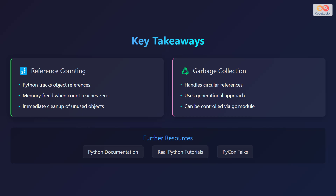Garbage collection handles circular references that reference counting cannot resolve, using a generational approach that can be controlled via the GC module. Explore further resources such as Python documentation, real Python tutorials, and PyCon talks to deepen your knowledge of memory management in Python.